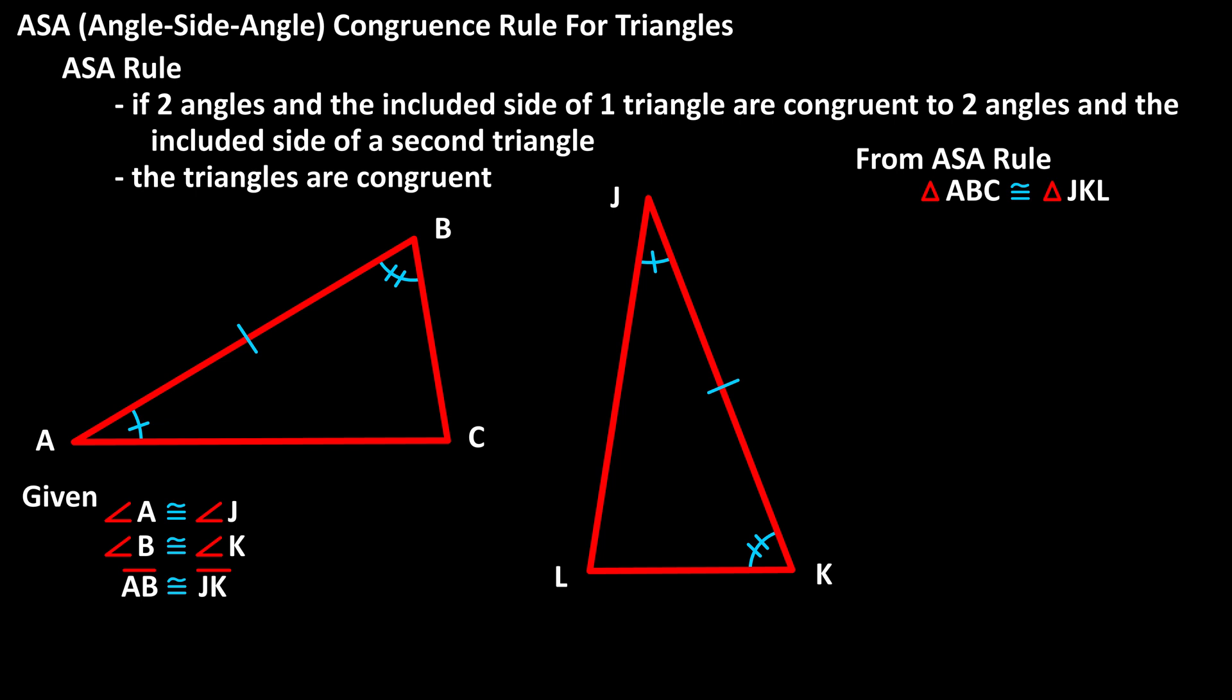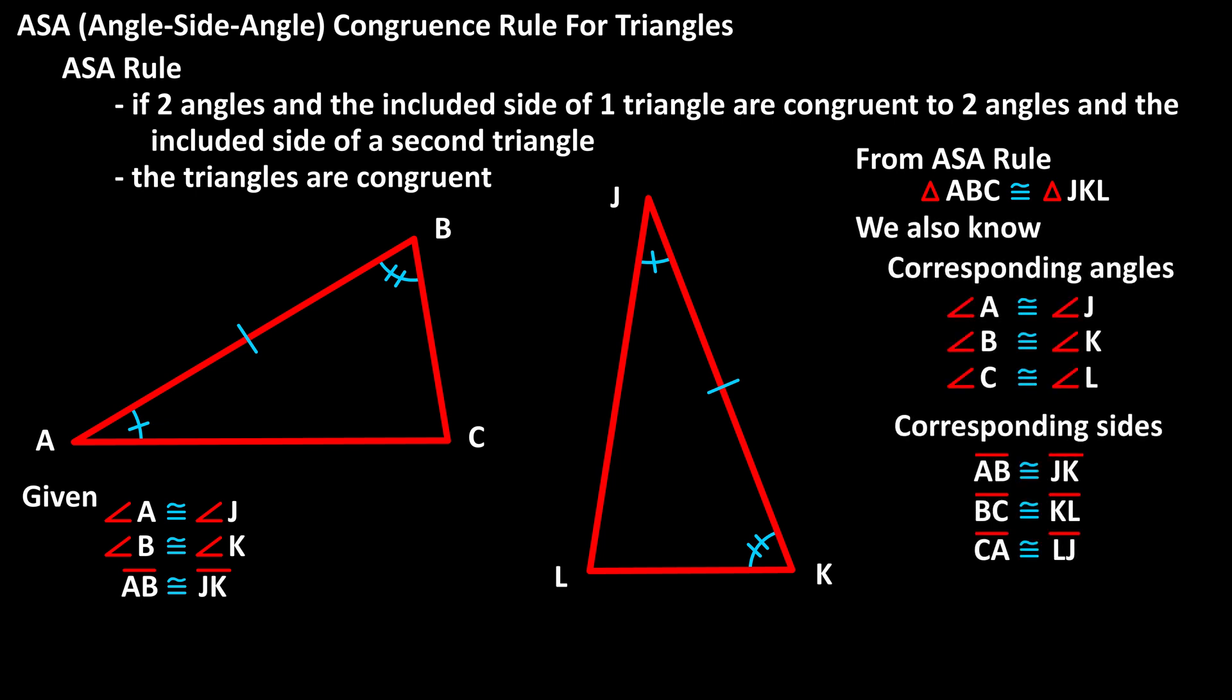Since we know the triangles are congruent, we also know that the corresponding angles and corresponding sides are congruent. So angle C is congruent to angle L, segment BC is congruent to segment KL, and segment CA is congruent to segment LJ. Since these triangles are congruent, we also know that the measures of the corresponding angles will be equal, and the measures of the corresponding sides will also be equal.